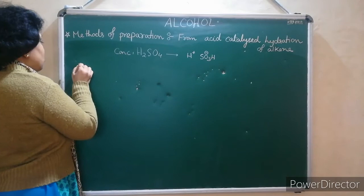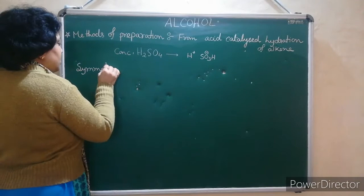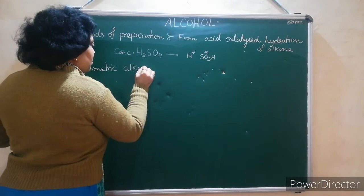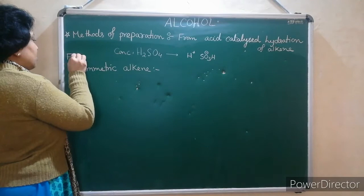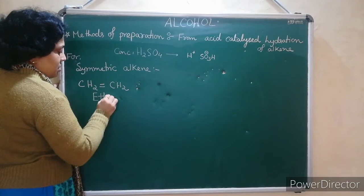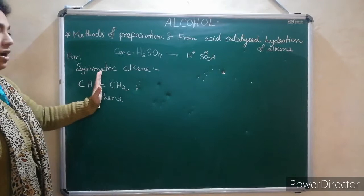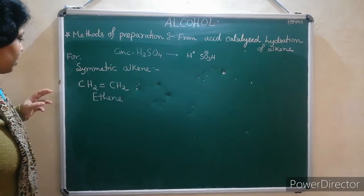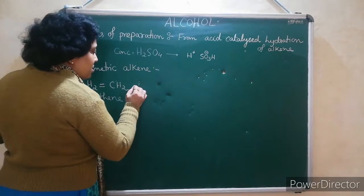Alkynes are of two types we have studied. First one is symmetric. For symmetric alkyne, example: ethene, CH2=CH2. Why is it symmetric? Because across the double bond, both sides have the same number of hydrogens. So it is symmetric.